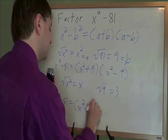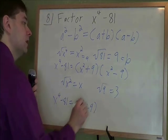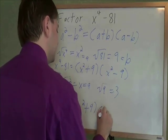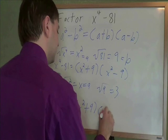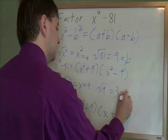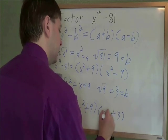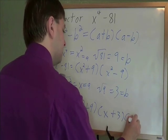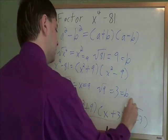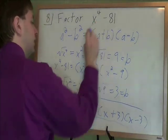So really x to the fourth minus 81, that's going to equal this part stays the same. We still have x squared plus 9. There are no special formulas for a square plus a square. That just stays how it is. And then here, my a, my first piece's square root is x, plus my b, my second piece's square root is 3, times a minus b, or here x minus 3. And this is the fully factored form of that.